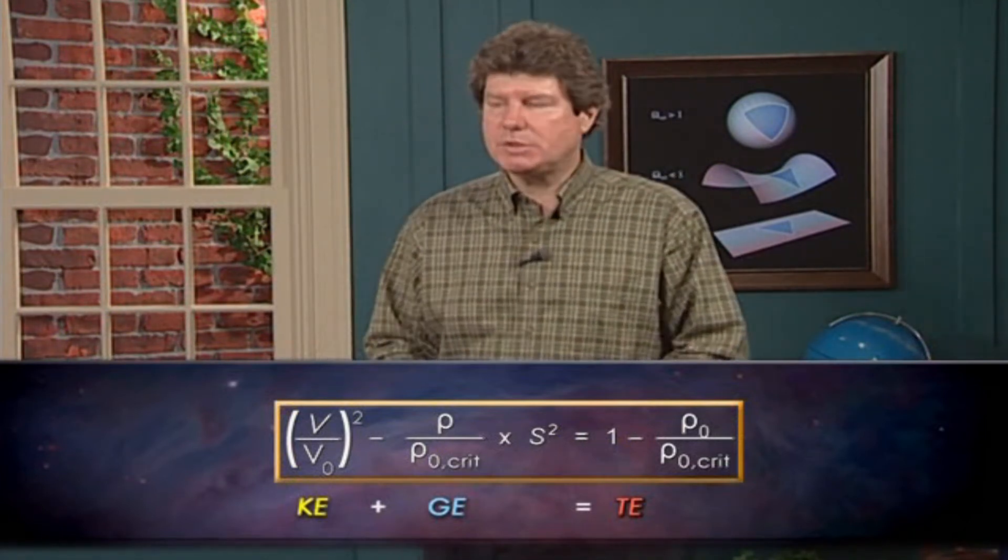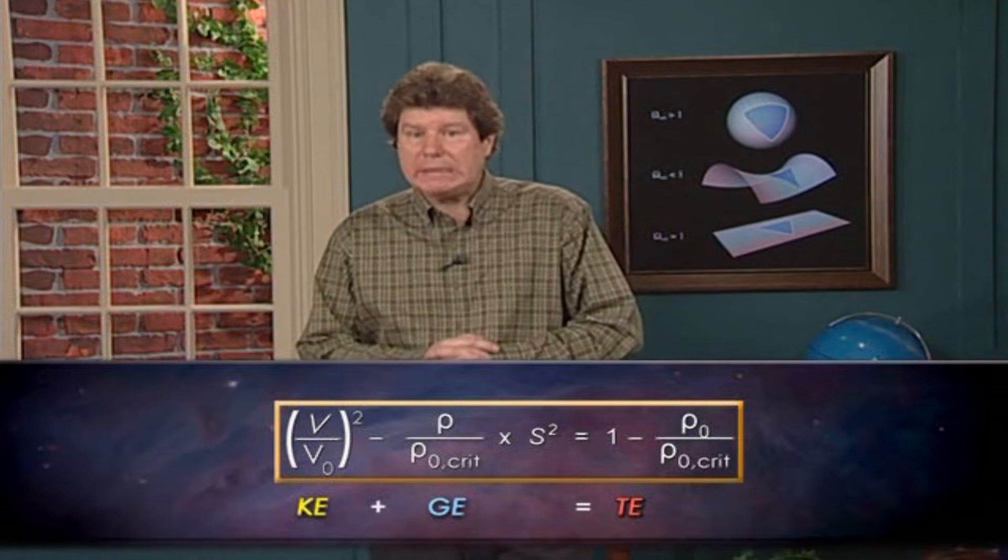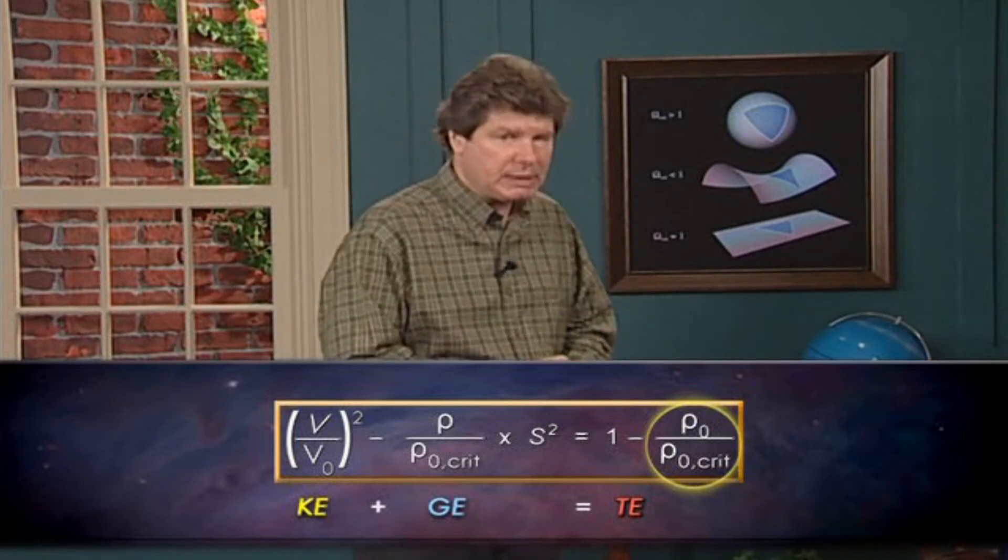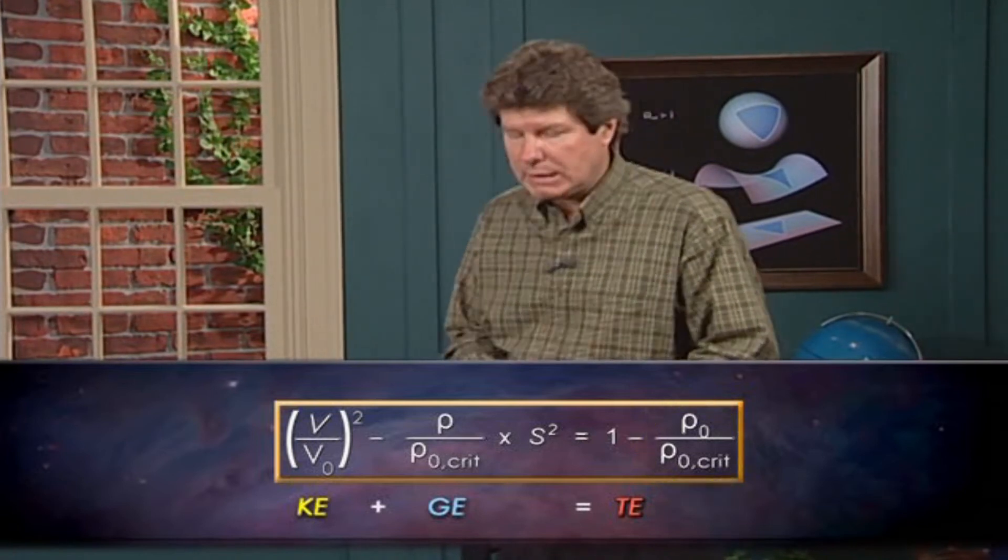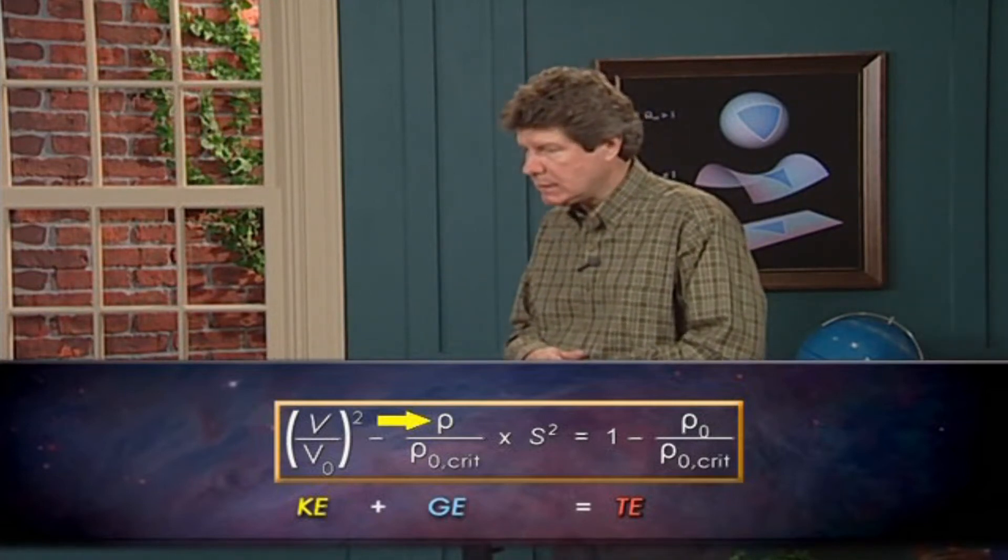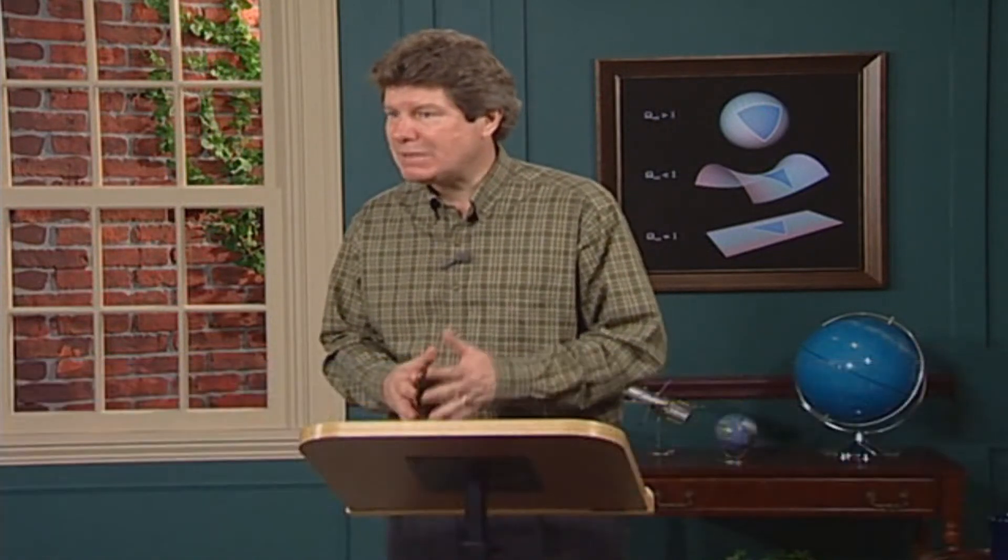Second, the solution to this equation gives us the expansion history, S of T, and there are two things that are going to affect it. The first we've already met, it's the ratio of the initial density to the critical density, ρ₀/ρ₀_crit. But the other thing is how the density of the sphere, ρ, changes with its size. For our rocks, the density drops as the sphere expands. But next lecture, we'll discover that the density of dark energy doesn't drop with expansion. And it's because of that that it drives an accelerating expansion.